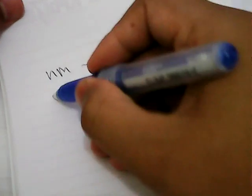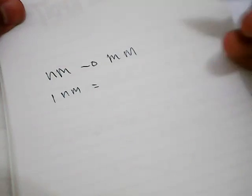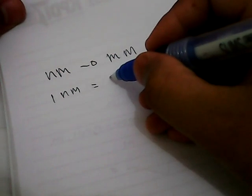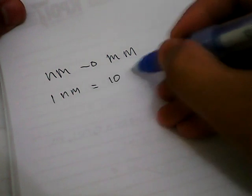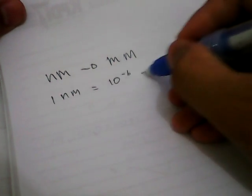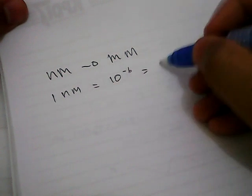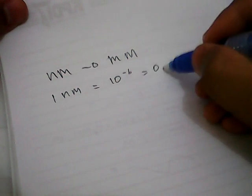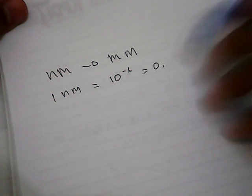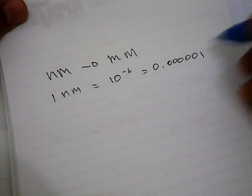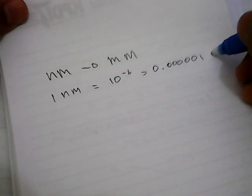One nanometer is equal to 10 power minus 6 millimeters. In another way, you can write it with decimal notation: it's equal to 0.000001 millimeters.